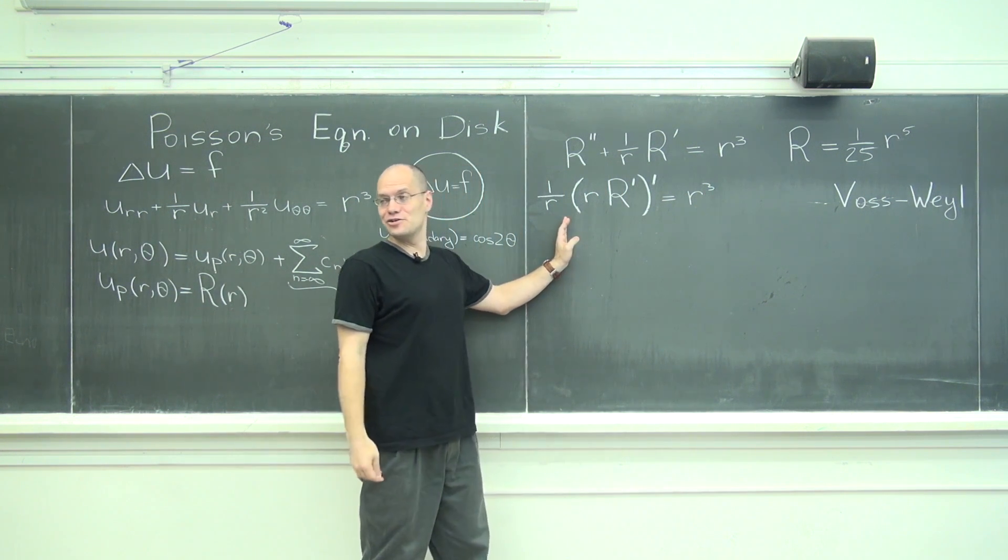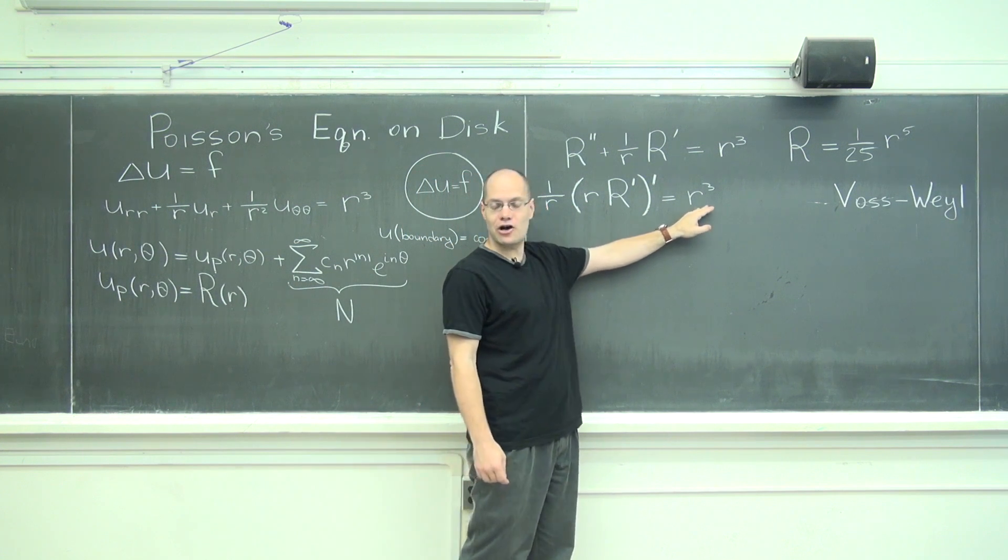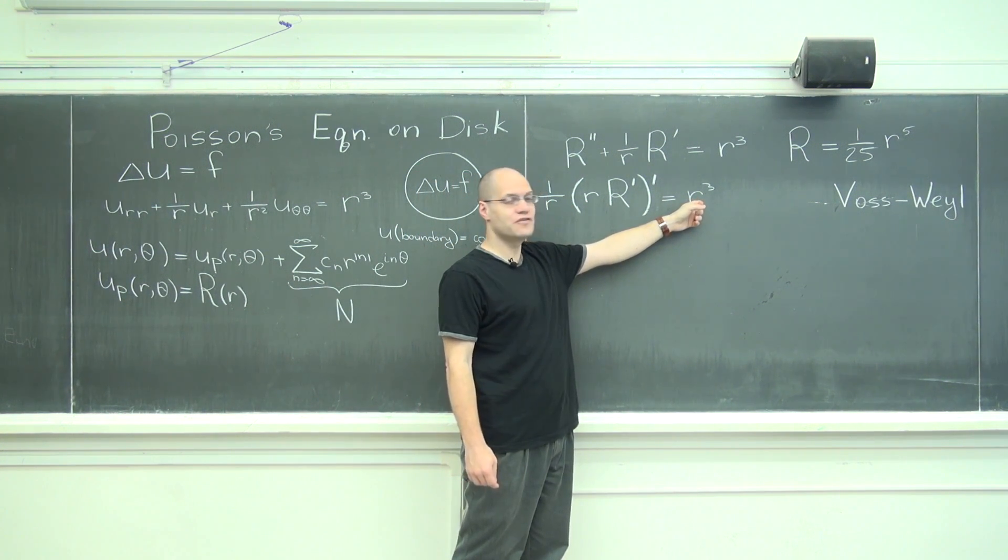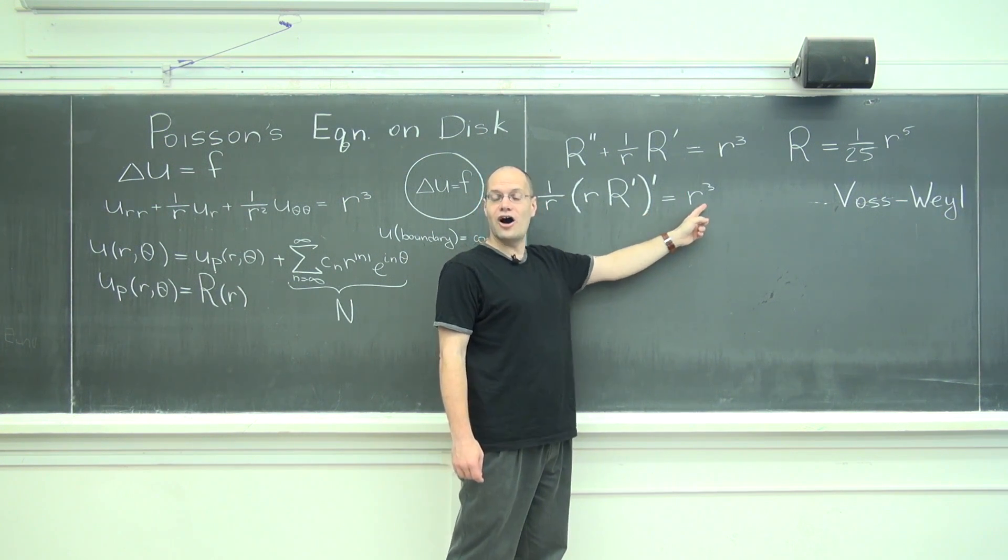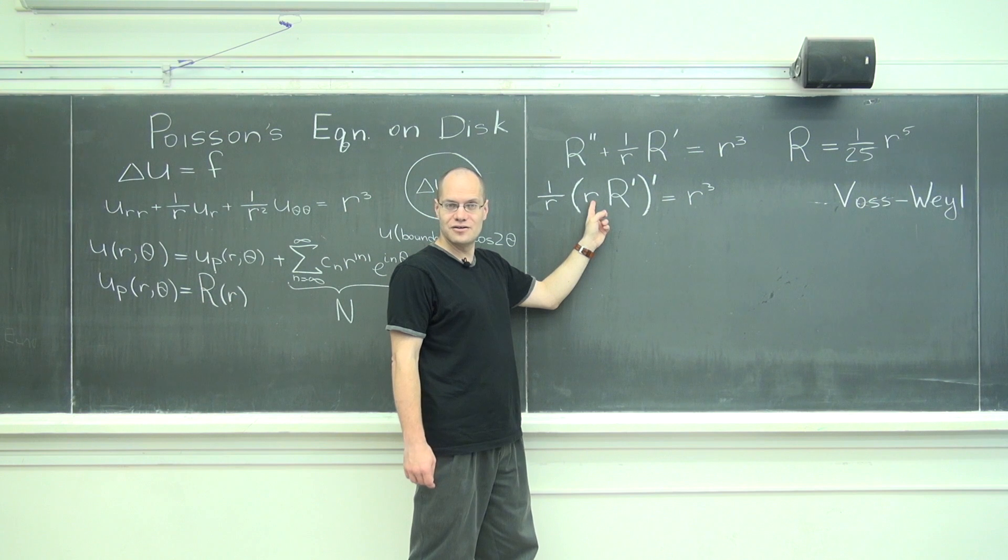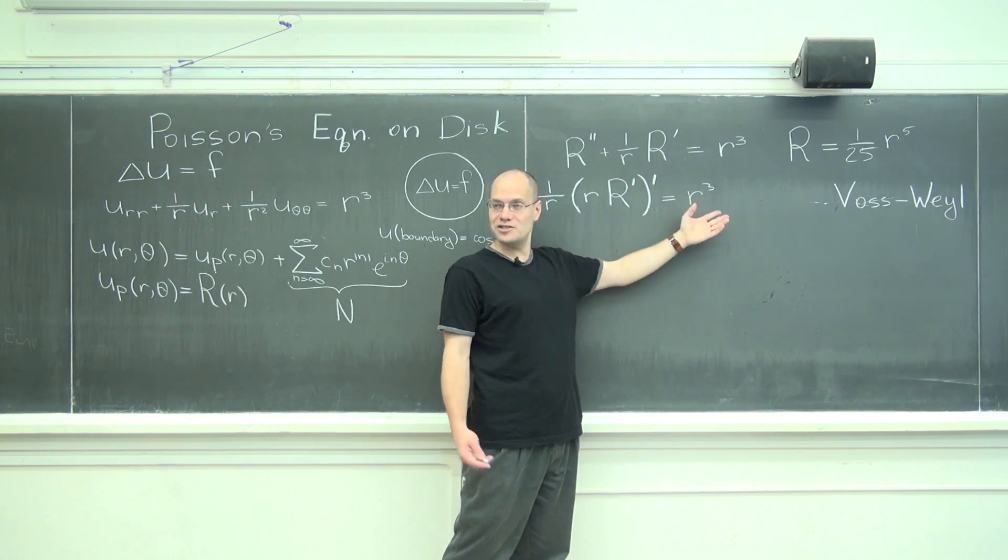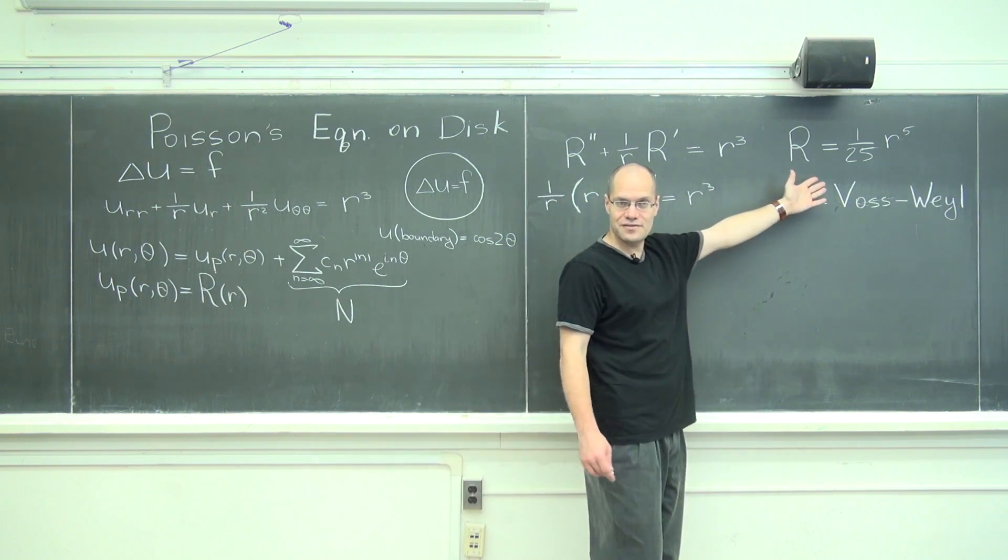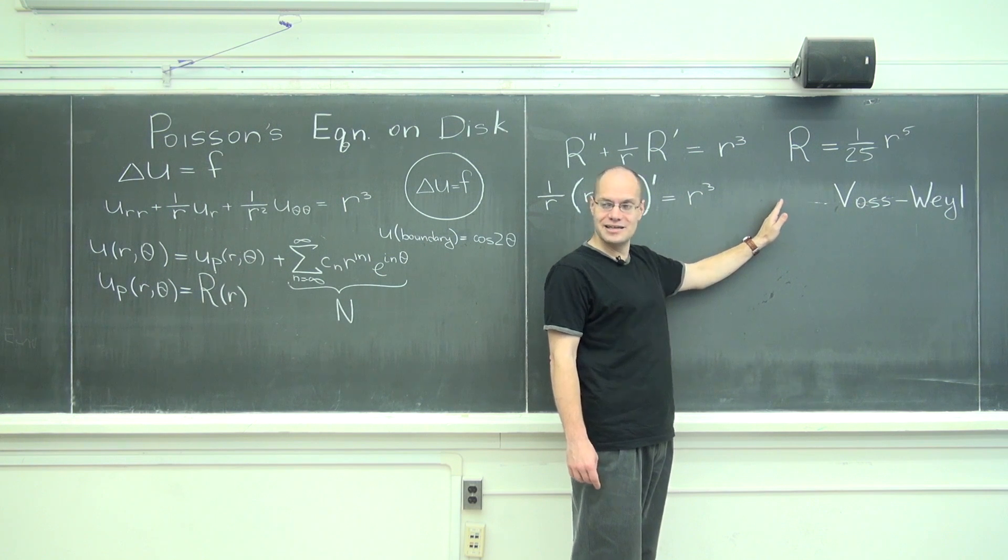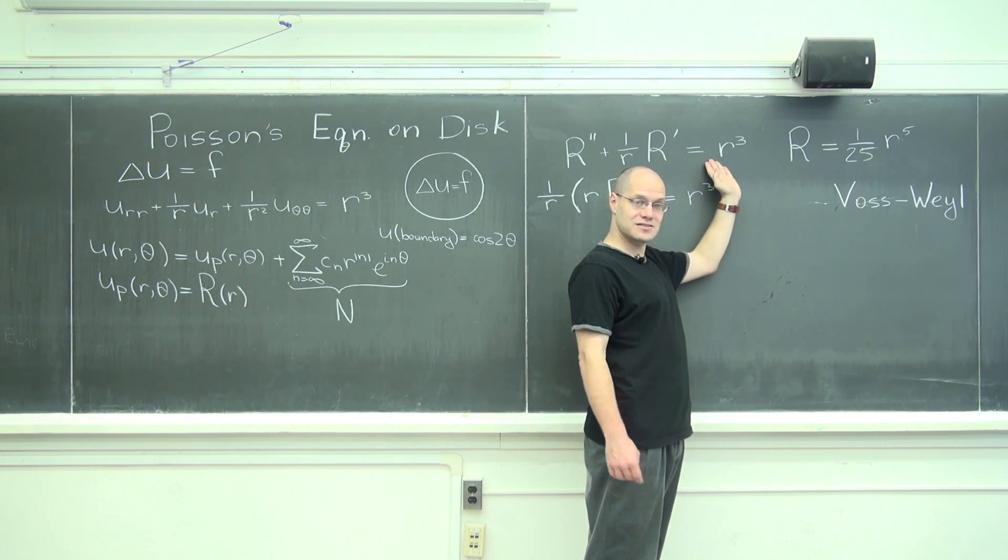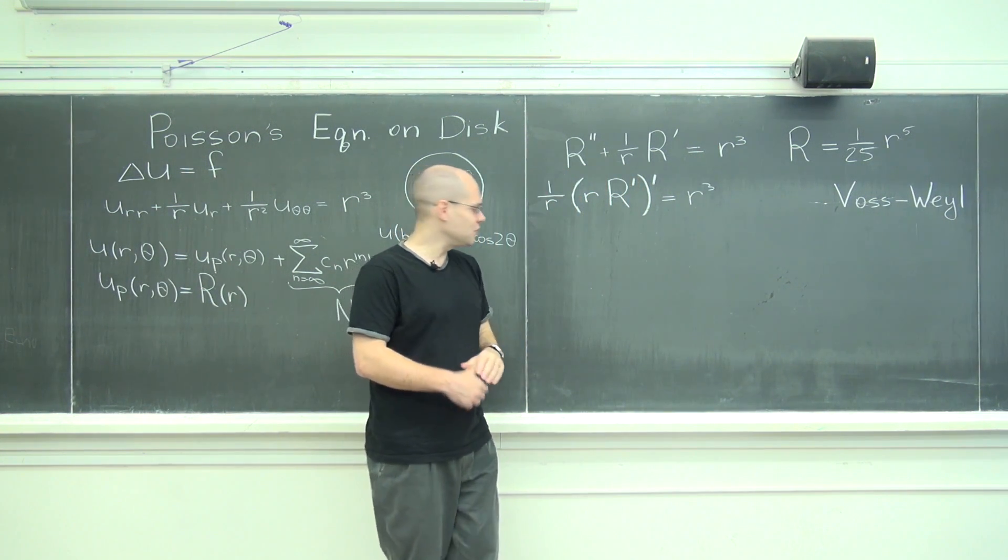Right, and now maybe it's a little, I don't know if it's easier to solve, but at least now it's straightforward. What you would do, you would multiply both sides by r, you'll get r to the fourth, then you'll integrate this derivative, you'll get one fifth r to the fifth. Then this r will make it one fifth r to the fourth, you'll integrate it again and you'll get one twenty-fifth r to the fifth. Okay, and all of those constants that were arising as you were integrating, they don't matter because if this was our objective is to find all the solutions, but we only need one.